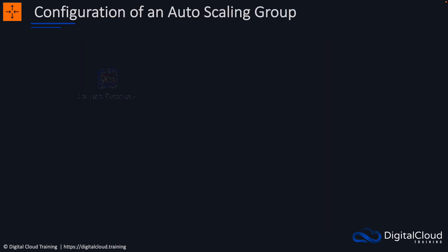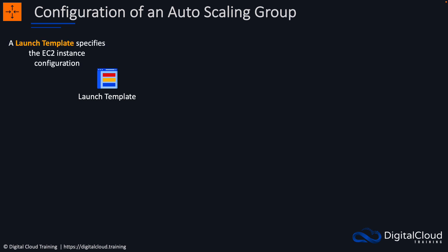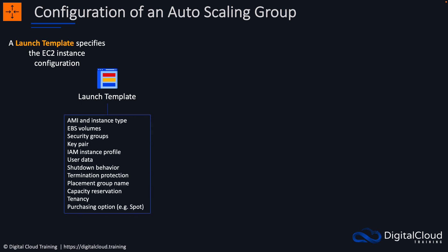How do we configure an auto scaling group? One way is to use something called a launch template. This specifies the configuration of the EC2 instances we're going to launch — like which AMI are we going to use, what's the network configuration, and so on. You can configure the AMI and instance type, EBS volumes, security groups, key pairs, and so on.